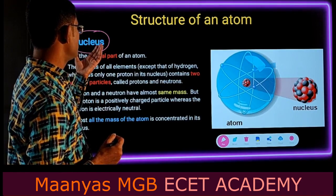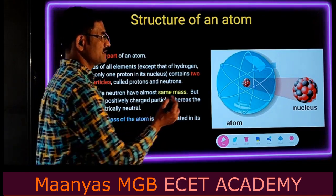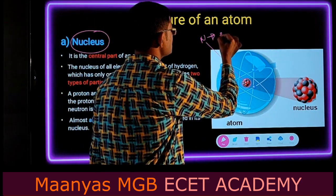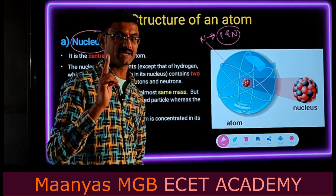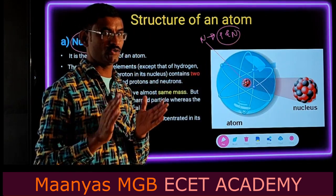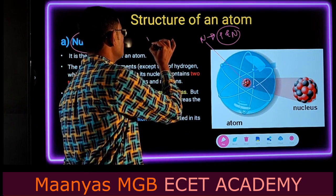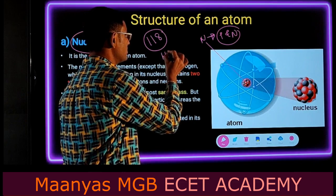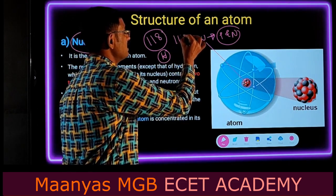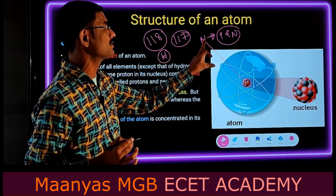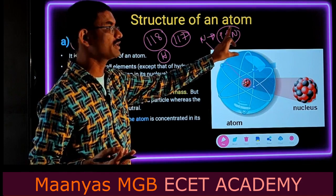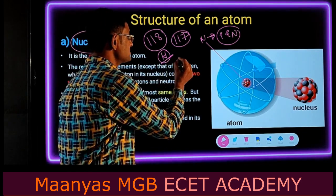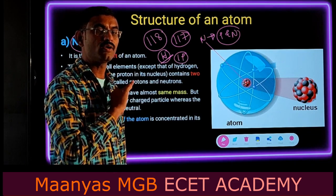Next, what are the important points about the nucleus? The central part of an atom is called the nucleus, and in general the nucleus consists of protons and neutrons. In the universe, 118 elements are available. Except hydrogen, the remaining 117 elements have a nucleus consisting of both protons and neutrons. But in the hydrogen atom, the nucleus consists of one proton only and no neutrons.